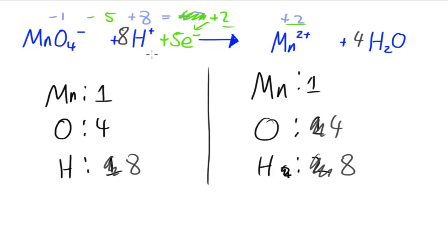So therefore this is the balanced equation: MnO4 minus plus 8H plus plus 5e minus produces Mn2 plus plus 4H2O.